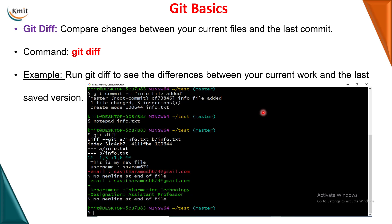The next command is git diff. If you want to see the difference between your previous commit and the current changes — the previous version versus the current version — use the command git diff. It will compare the changes of your current file with the previous version.